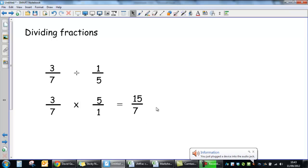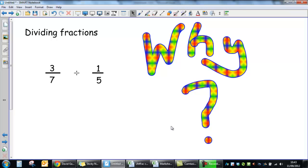After you've done that, you then just multiply the numerators and denominators, and for this one you get 15 over 7. But you may have been wondering why that works.